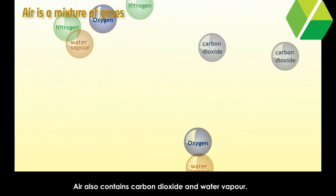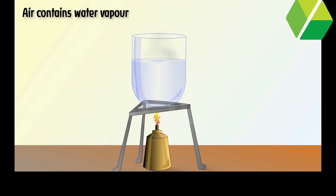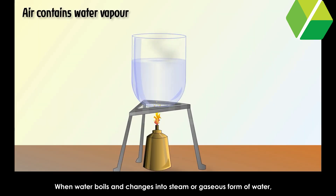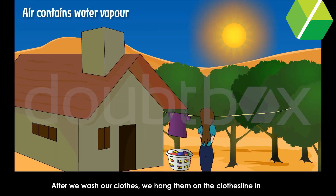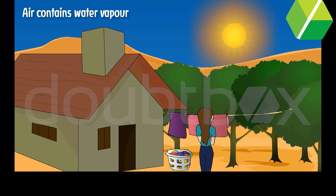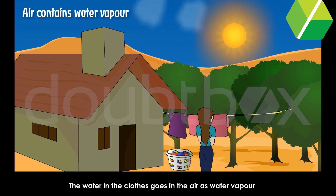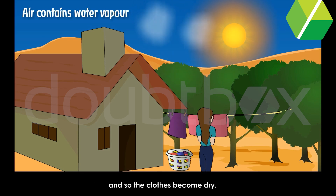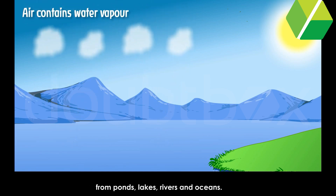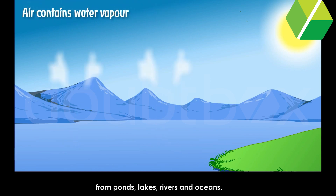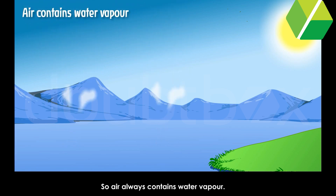Air also contains carbon dioxide and water vapor. Air contains water vapor when water boils and changes into steam, which is the gaseous form of water. After we wash our clothes, we hang them on the clothesline in the sun to dry. The water in the clothes goes into the air as water vapor, and so the clothes become dry. Water vapor gets into the air all the time from ponds, lakes, rivers, and oceans.